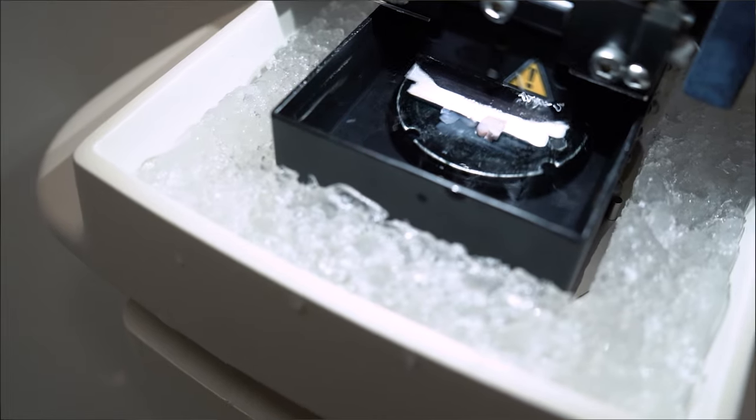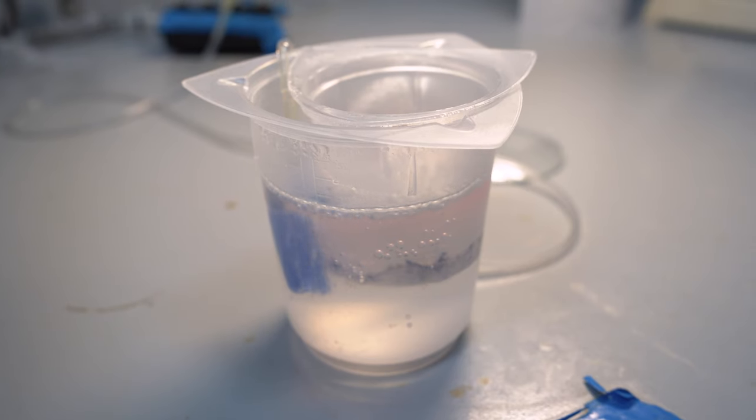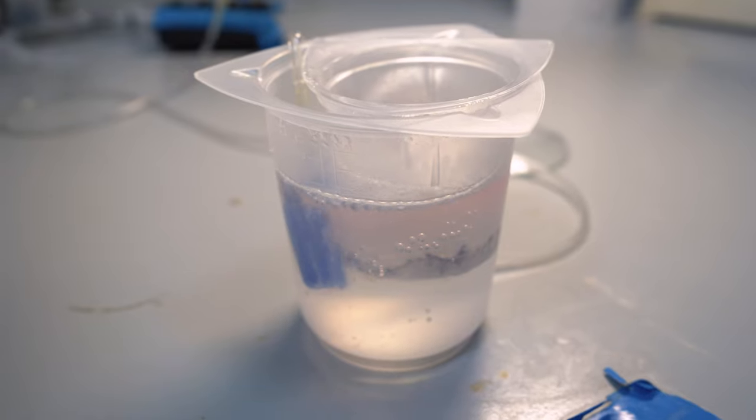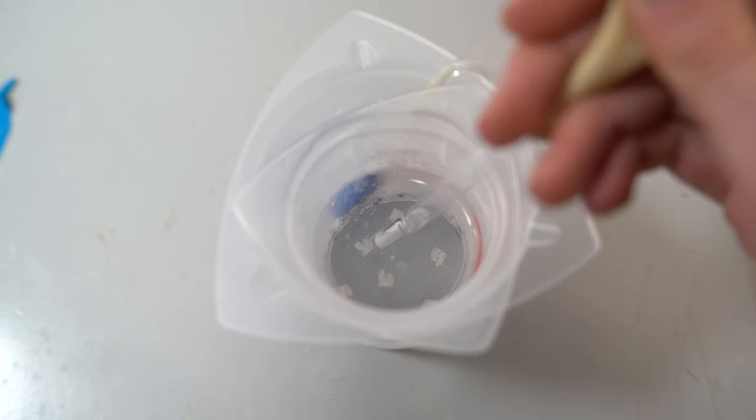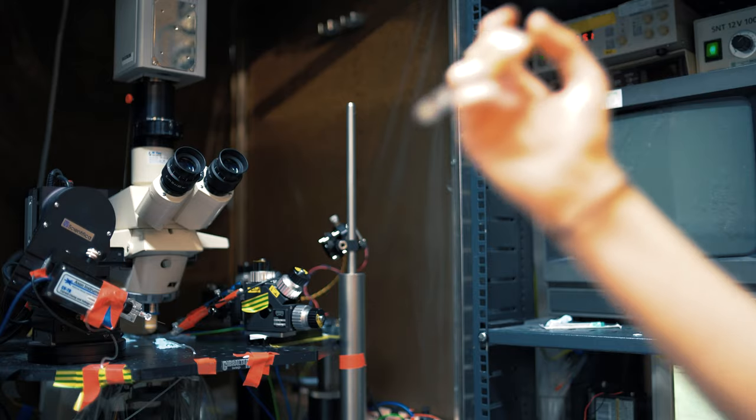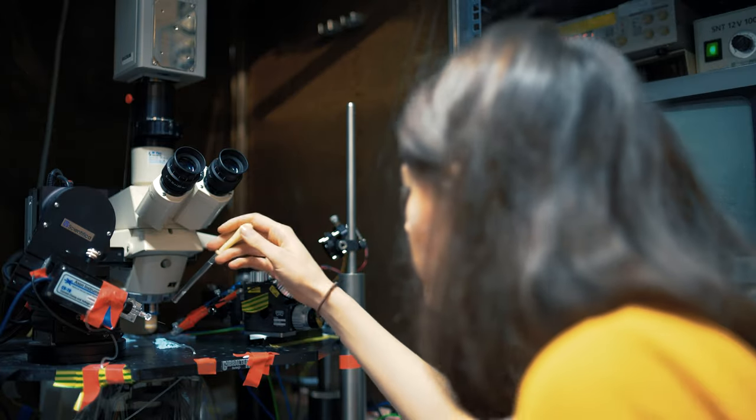We prepare brain slices, and the cells in the brain tissue can be kept alive in oxygenated artificial brain fluid for several hours. We pick up a brain slice and place the tissue under a microscope.